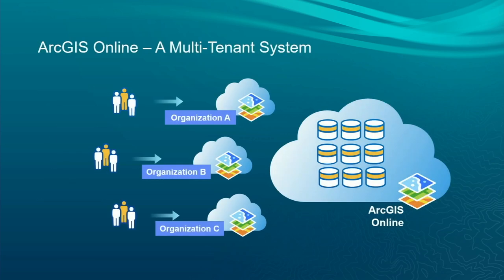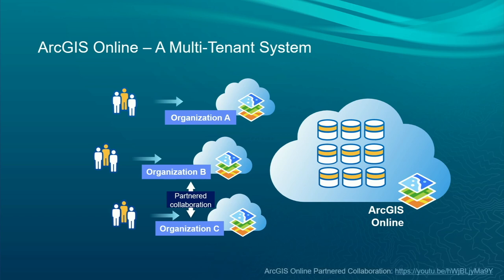ArcGIS Online is a multi-tenant system, meaning your ArcGIS Online organization lives alongside other organizations in the same ecosystem. This allows for a rich platform where you can create and share content, and other people can use it. Your members can work with members in other organizations together in groups, making rich collaboration possible. If two organizations need to work even closer together, we have something called partner collaborations. You can search on YouTube for ArcGIS Online partner collaborations for more detail.